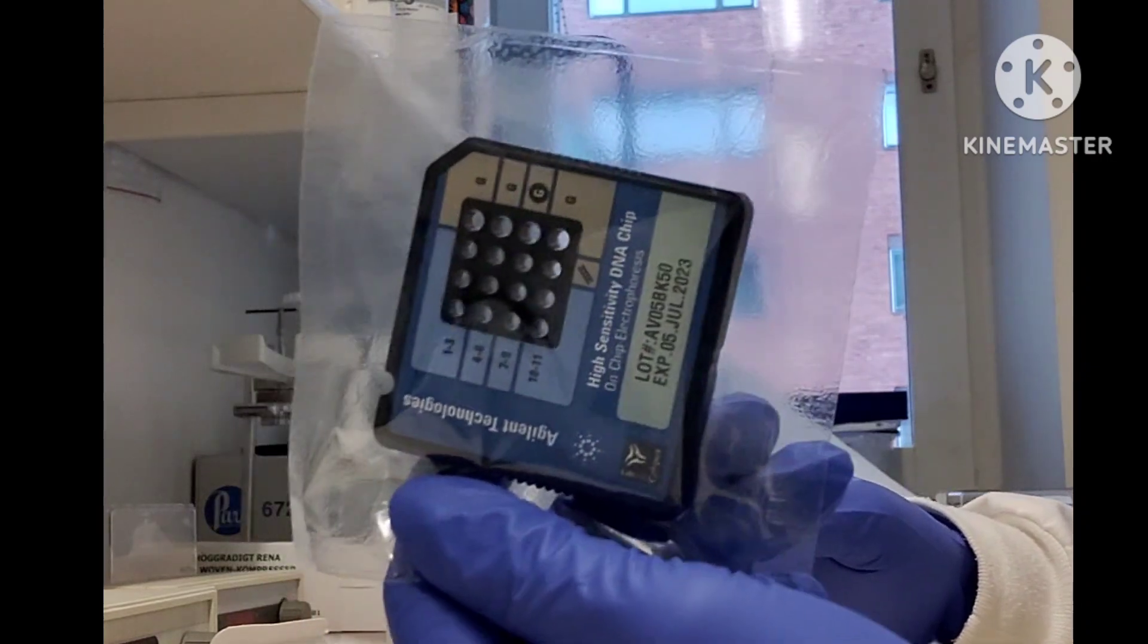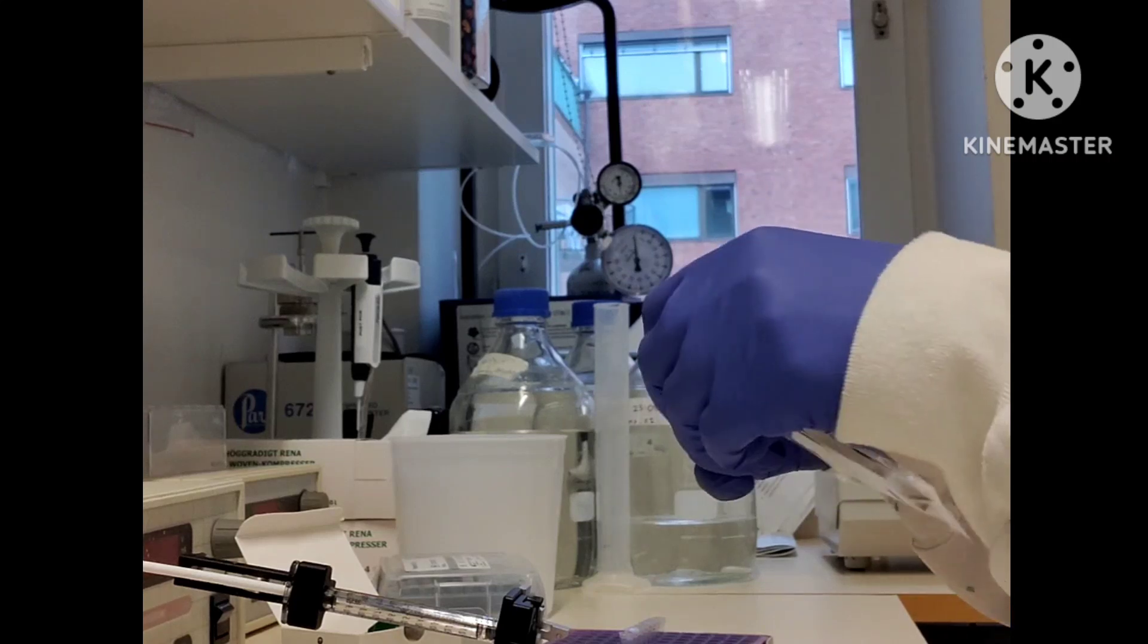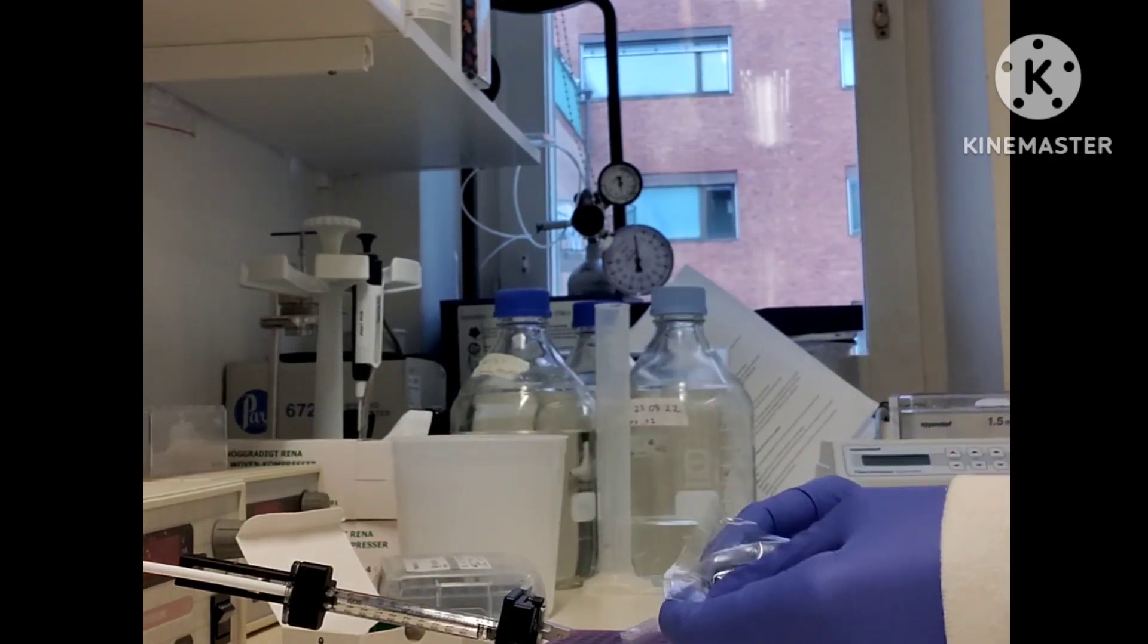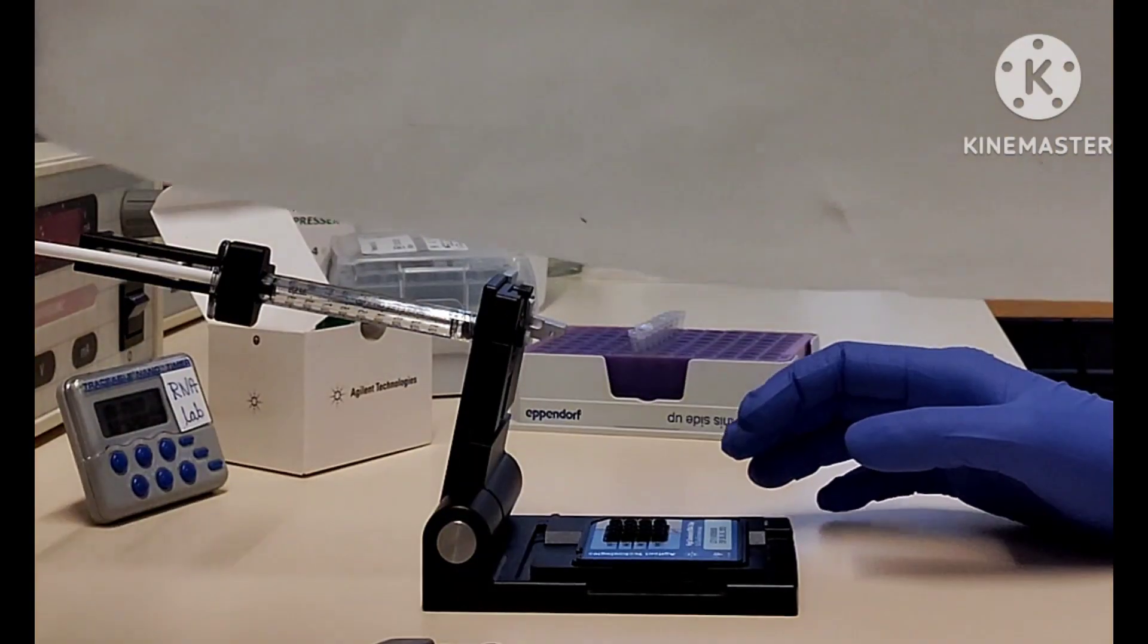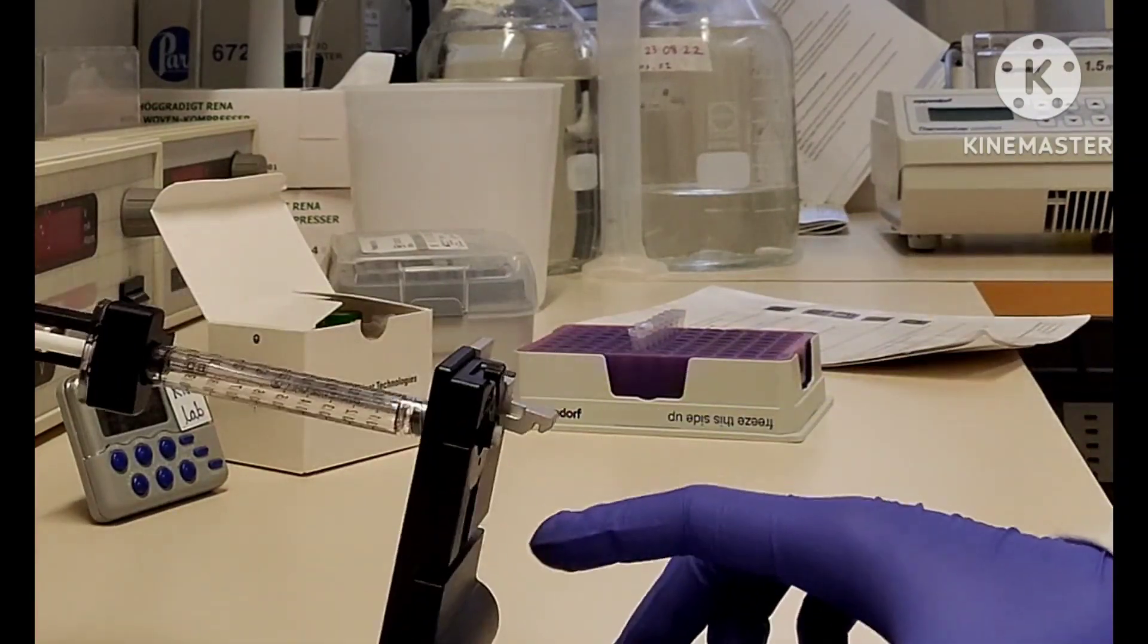This is the chip where I will load my sample and do the assay. If you see the back, you can actually see the connections between each well. I tried to show you that, but it's not possible in the video, so you can check it out on your own. I will just take them out and place the chip on the priming station.